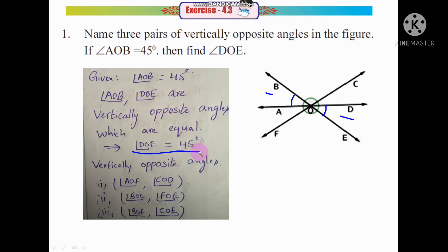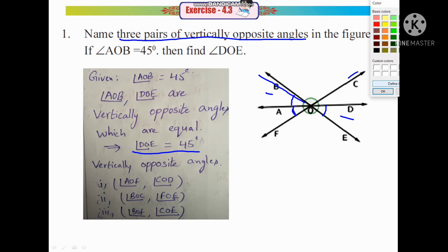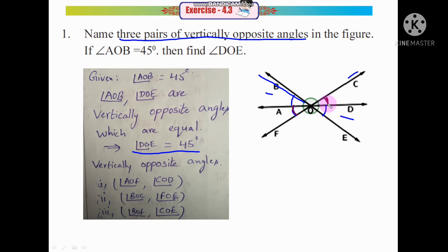Next, we need to write three pairs of vertically opposite angles. If you observe the figure, BE is a straight line, CF is a straight line, and AD is a straight line. The first pair: angle AOF and angle COD are vertically opposite angles.